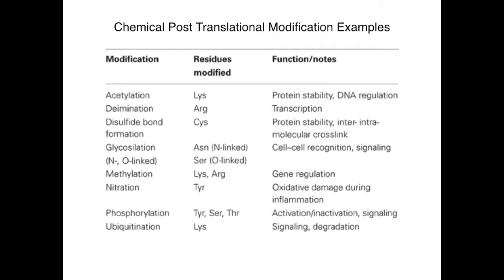Some of these chemical modifications most have probably heard of: phosphorylation and acetylation. These not only regulate certain functions of the protein, but also are indispensable to the essential pathways of the cell.